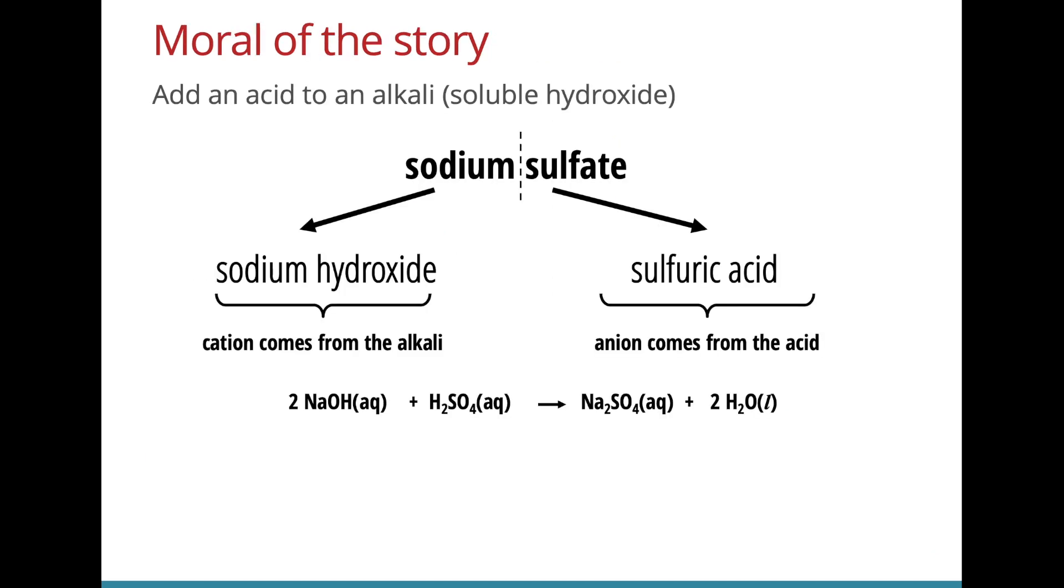How do we decide which alkali and acid to use? Very simple we just break up the salt into two parts. The cation which is sodium here always comes from the alkali and we use sodium hydroxide. The anion always comes from the acid so sulfate comes from sulfuric acid, chloride comes from hydrochloric acid and nitrate comes from nitric acid. It is pretty straightforward to decide which reagents to use.